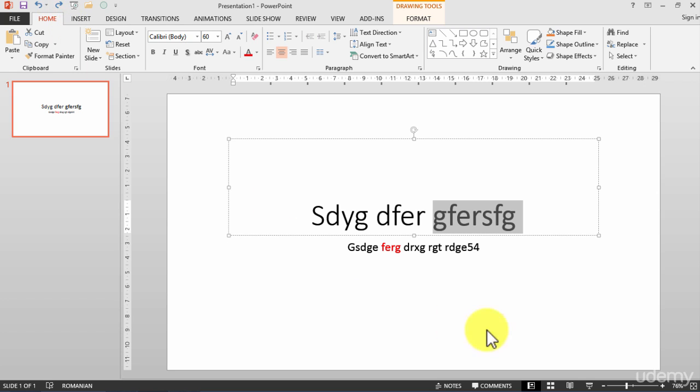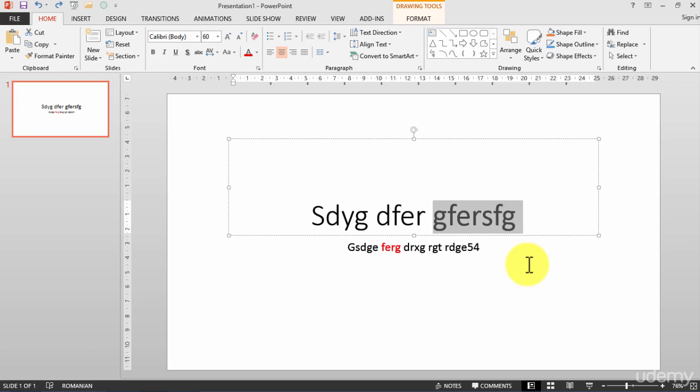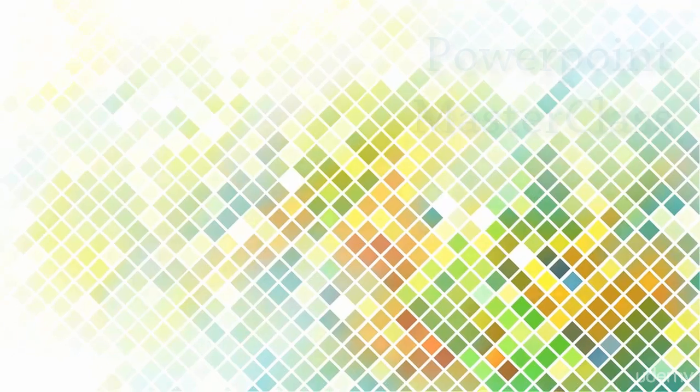So it's quite easy — undo and redo. You have the keyboard shortcuts: Control+Z for undo and Control+Y for redo.